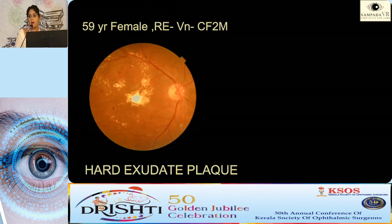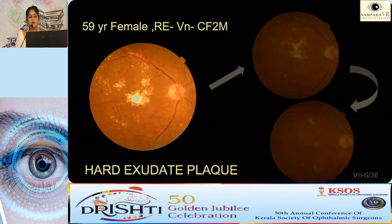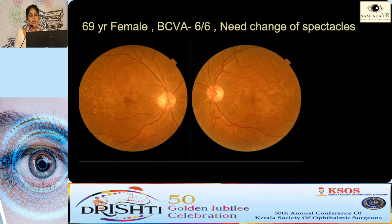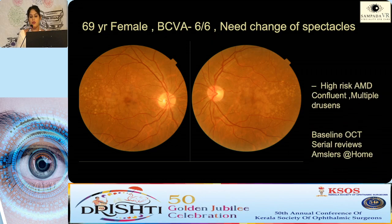What about a hard exudate plaque? Don't assume the patient is not going to improve. When diabetes is well controlled and you start giving statins, the hard exudate plaques can melt beautifully. At the end of one year, a patient can improve from CF 2 meters to 6/36. For asymptomatic patients, this is a typical case of high-risk AMD with confluent multiple drusens — always look for subtle SRF or IRF, and a baseline OCT is needed.